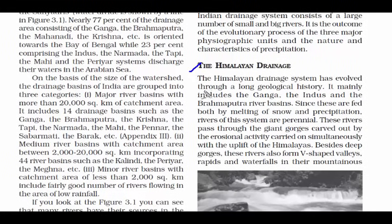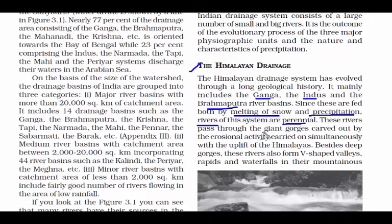The Himalayan drainage mainly consists of the Ganga, Indus, and Brahmaputra. These rivers are formed by melting of snow or precipitation and are perennial — meaning they flow continuously and never dry off. While making the journey from the Himalayas to the plain areas, they pass through giant gorges with a lot of erosional activity, and they also form V-shaped valleys.